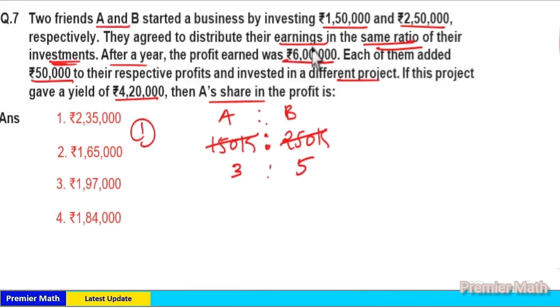Now earnings are divided in the same ratio of investment. Here, 3 plus 5, 8 part is equal to earning ₹600,000. 8 part is equal to ₹600,000.